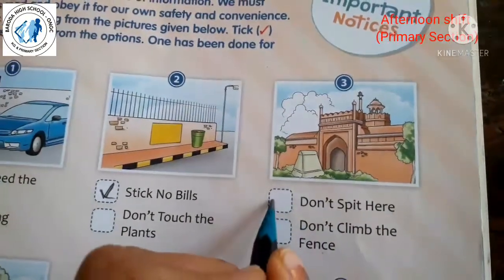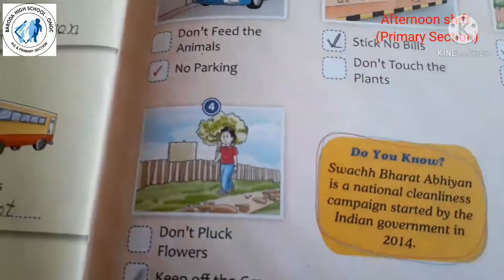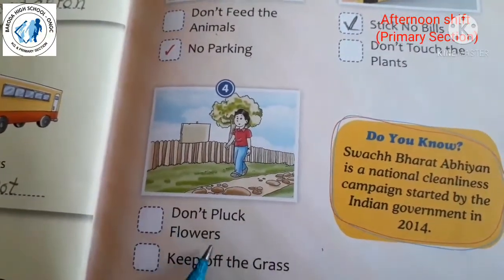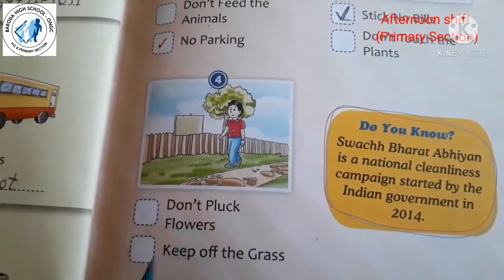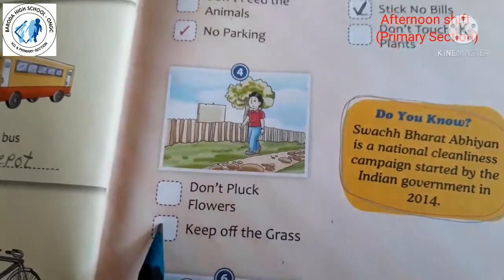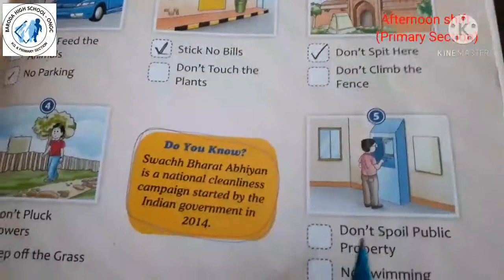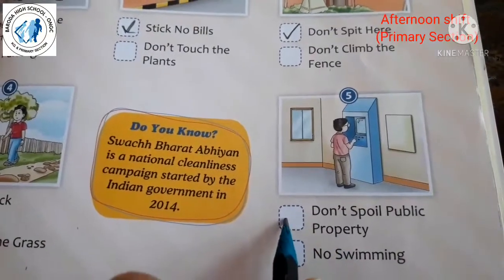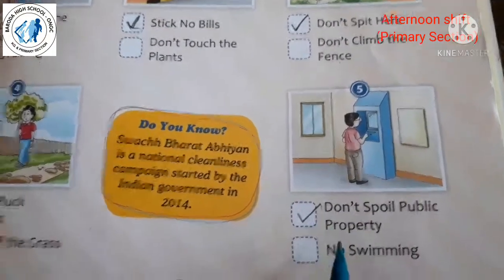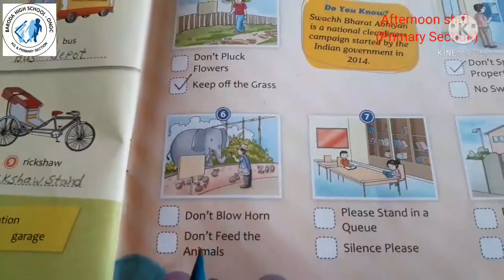The fourth picture shows no flowers, so the correct notice is 'keep off the grass'. The fifth picture — the options are 'don't spoil public property' or 'no swimming'. The correct notice is 'don't spoil public property'.